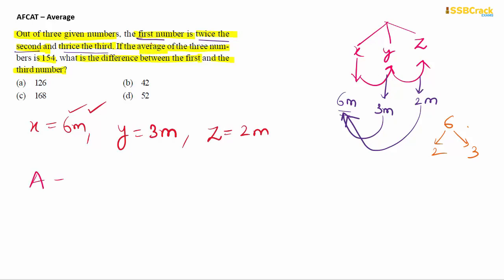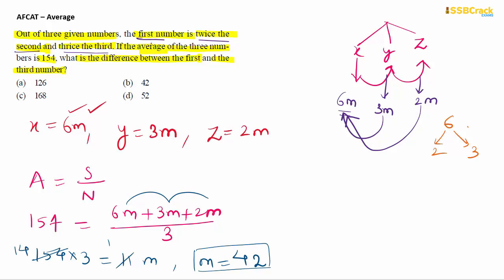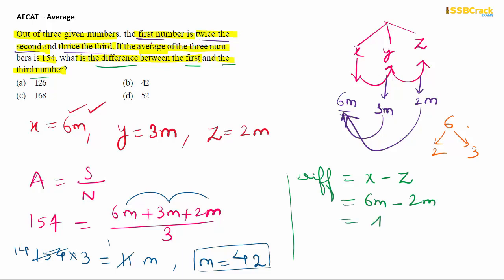Now applying the average formula: 154 = (6m + 3m + 2m) / 3, so 154 × 3 = 11m, giving m = 462 / 11 = 42. We need the difference between the first and third numbers: X − Z = 6m − 2m = 4m = 4 × 42.